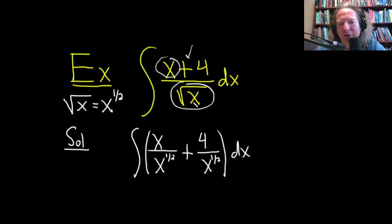Okay, so just breaking it up, it's x over the square root of x, but that's really x to the one half, plus 4 over the square root of x, but that's really x to the one half.